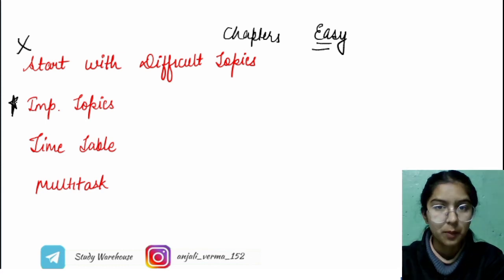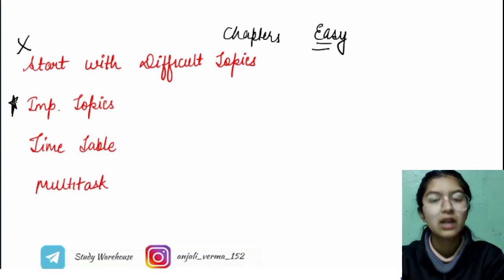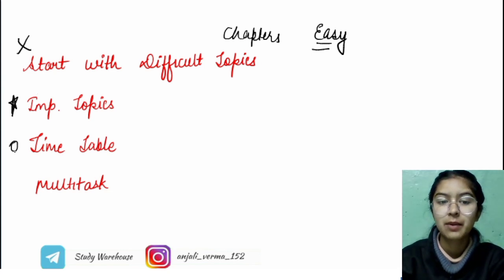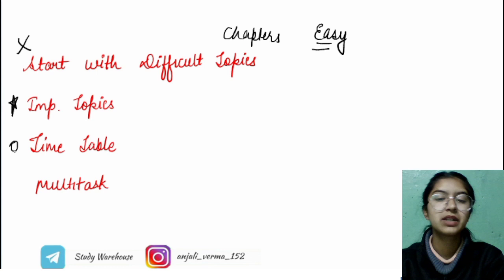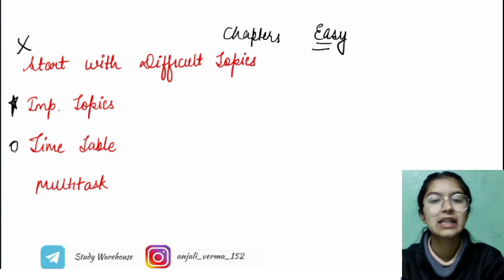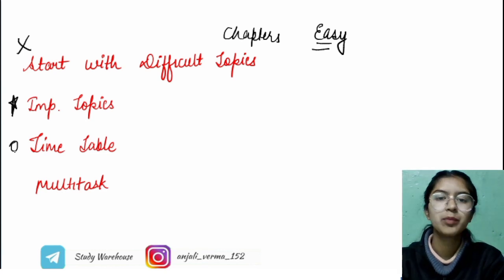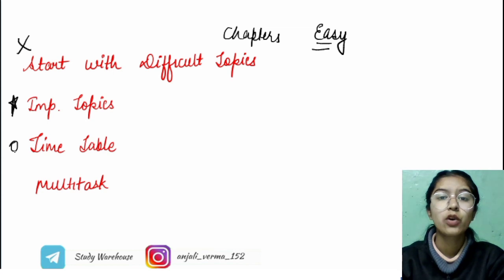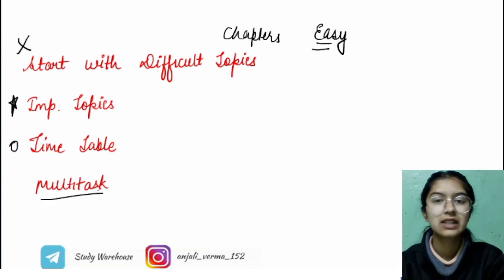Know your important topics. Many students don't know what the important topics are in physics or chemistry. I have already made videos - I'll provide the link in the description. Definitely check them out because you have to focus on all the important topics and repeated questions first. Now regarding timetables - we make timetables that we have to study everything, but it doesn't happen, so it leads to demotivation. It's better to make your to-do list for the next day. One day before, just note down what you have to do.